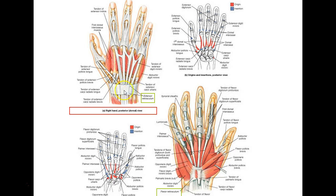The retinaculum is technically a ligament. On the extensor side it's called the extensor retinaculum — it holds tendons down and keeps them from popping up when you extend the wrist. On the flexor side there's also a flexor retinaculum. About 90% of us have the palmaris longus tendon riding above the retinaculum rather than beneath it. 'Retinaculum' is from the Greek or Latin for 'net.'